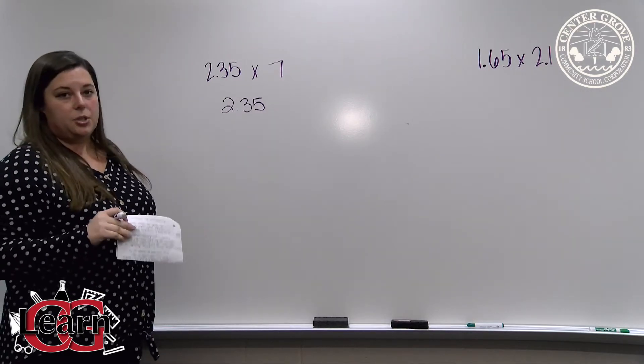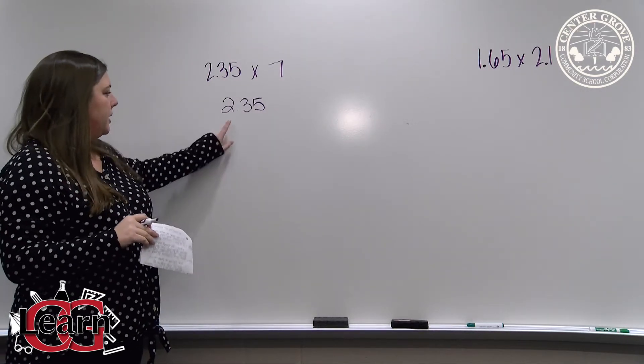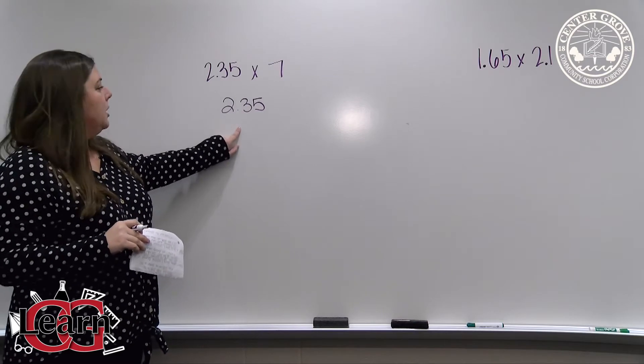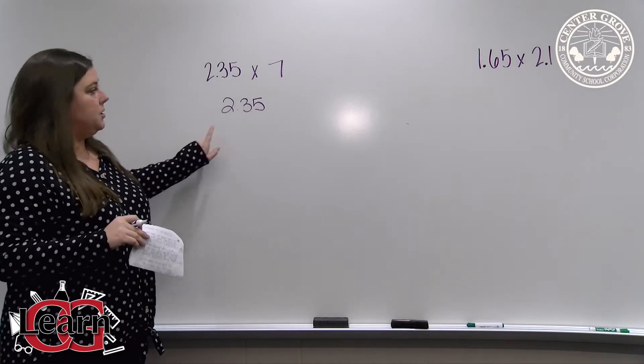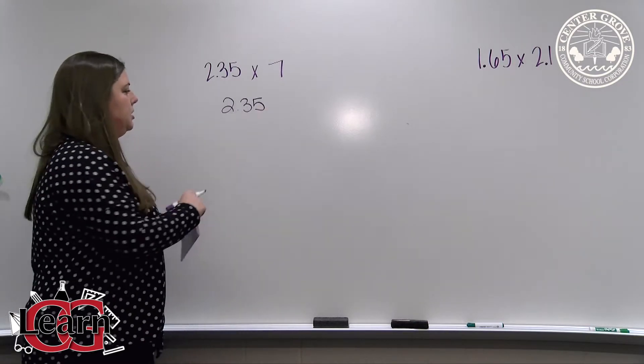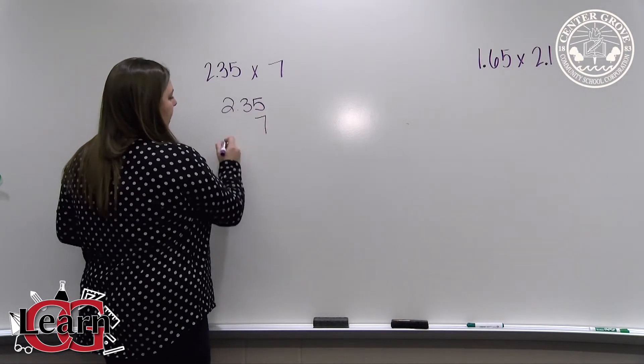Then unlike adding and subtracting decimals, we do not line up our decimal points. Instead, we line up our digits from the right to the left. So 7 is going to go directly under the 5.